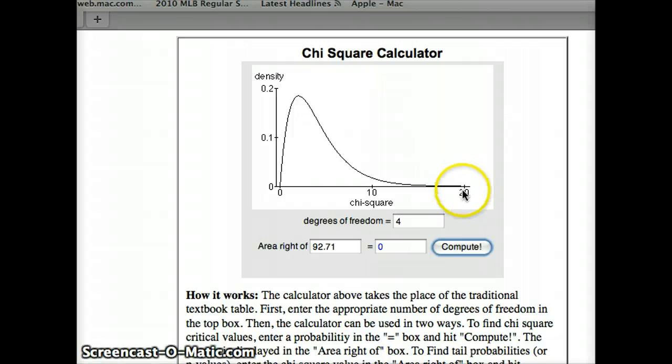You can see anything beyond 20 is an extreme value. So 92.711 is a very extreme value. And we get a p-value of zero.